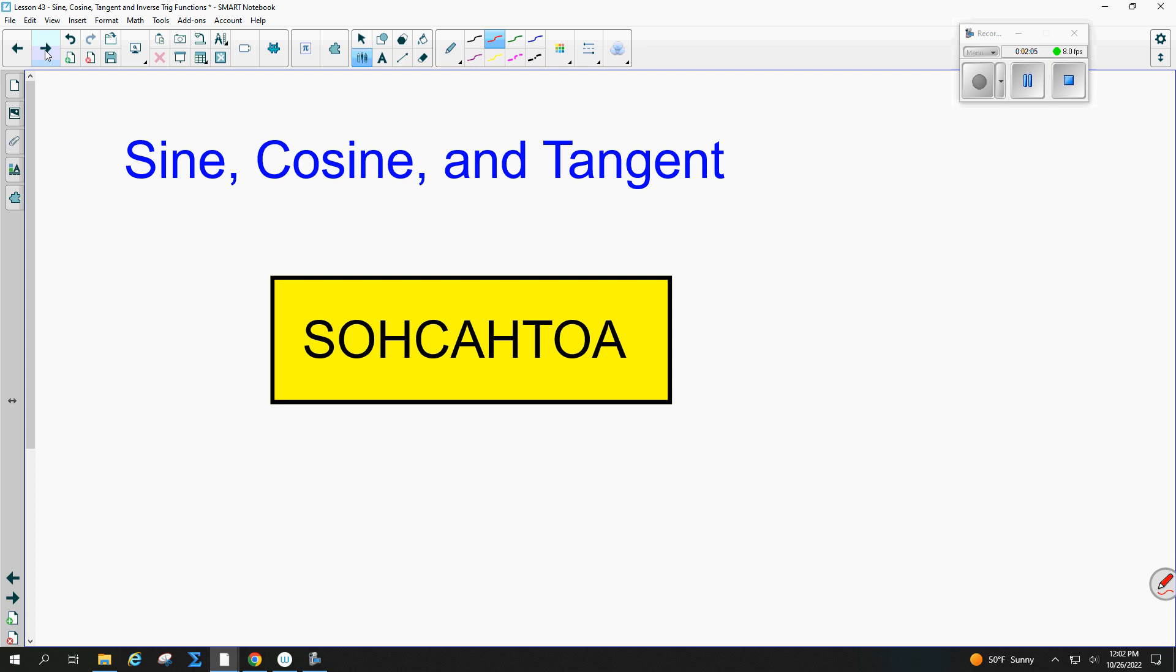So what this means is the sine of some angle, I'll say A, is always equal to opposite over hypotenuse. And then the C stands for cosine. So the cosine of some angle will always be equal to adjacent over hypotenuse. And the tangent of some angle is always equal to opposite over adjacent.